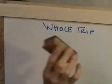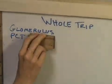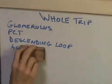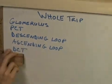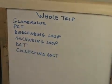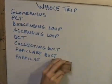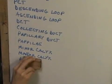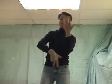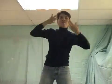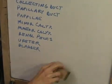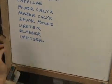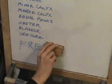Come on now, y'all. We're gonna go through the whole trip: Glomerulus, PCT, descending loop, ascending loop, DCT, collecting ducts, papillary ducts, papillae, minor calyx, major calyx, renal pelvis, ureter. Then you go to the bladder, to the urethra, and then you're free.